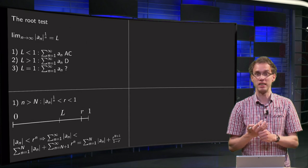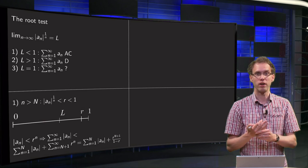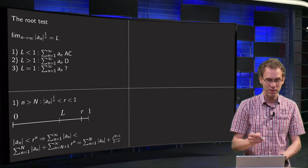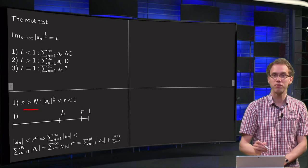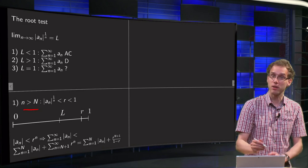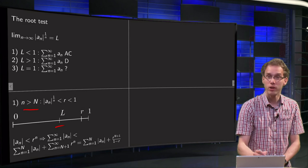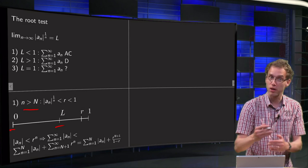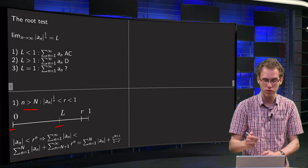First of all, the first case. If L is smaller than 1, what does that mean? Well, it means if you are far enough, then your terms get very close to your L. Your L is smaller than 1, so positive of course, we are taking absolute value, so only positive terms.